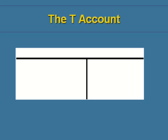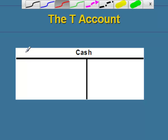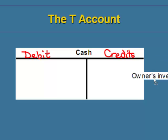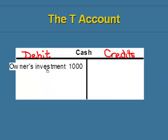The way a T-account is organized is that the name of the account usually appears at the top — I'm going to label this one with the term 'cash.' When you put the transactions in a T-account, the transactions that are debits are always put on the left-hand side. So this is always the debit side, and the transactions on the right-hand side are always considered credits. We have debits on the left and credits on the right.